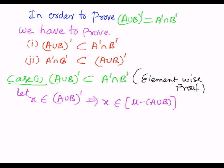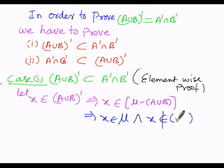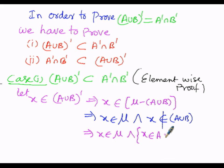So we have: x ∈ μ and x ∉ (A∪B). Now, x does not belong to A∪B. Since it is 'does not belong to,' the union changes to intersection. That is, x ∉ A union B becomes x ∉ A AND x ∉ B — because when the condition is 'does not belong to,' union is changed to intersection (using the logical AND, the inverted V symbol).